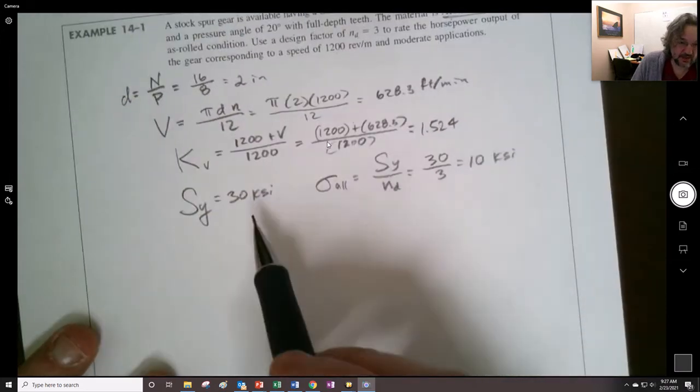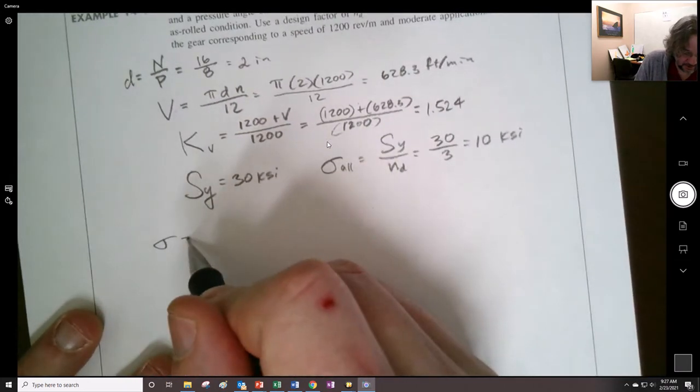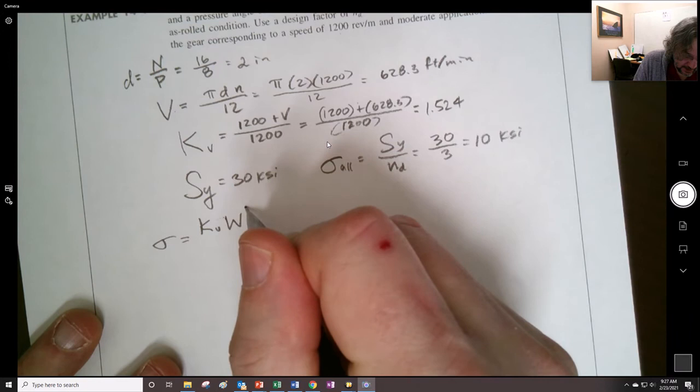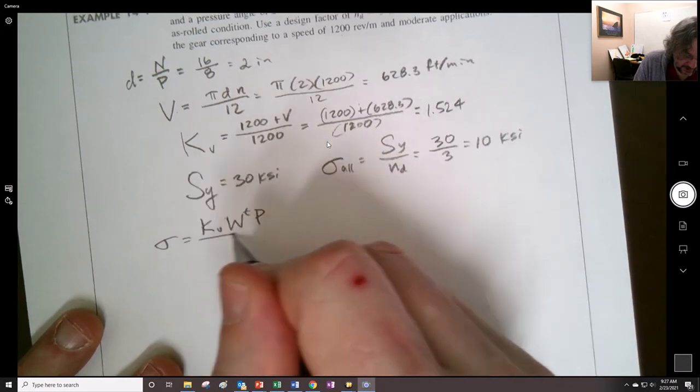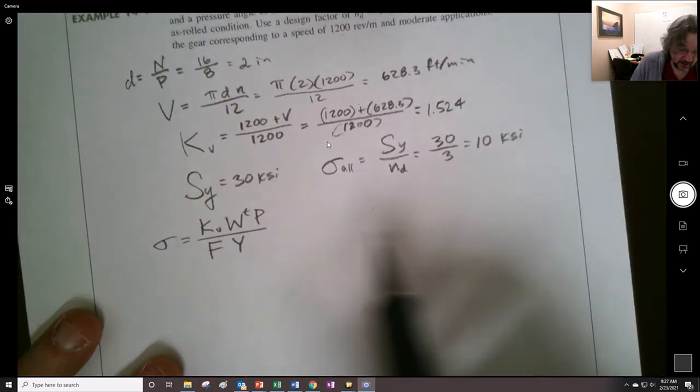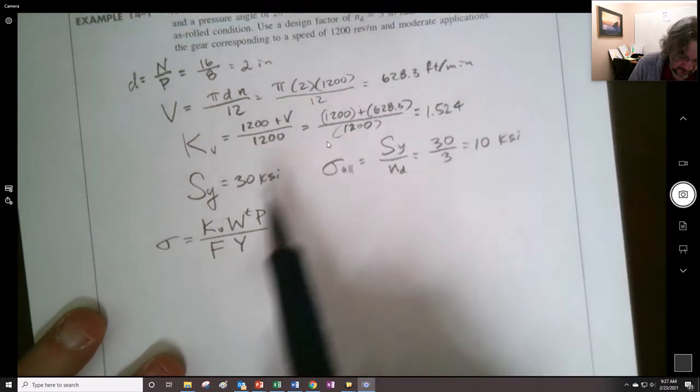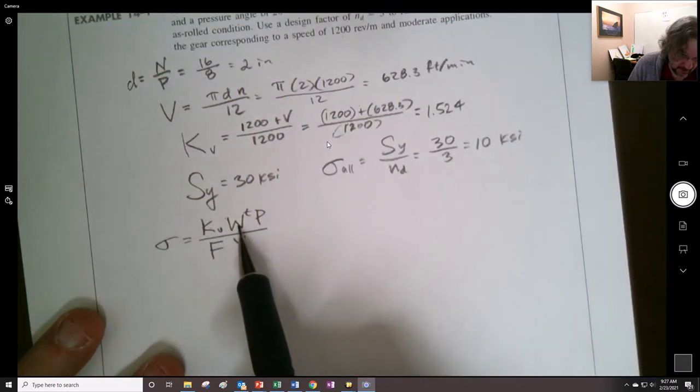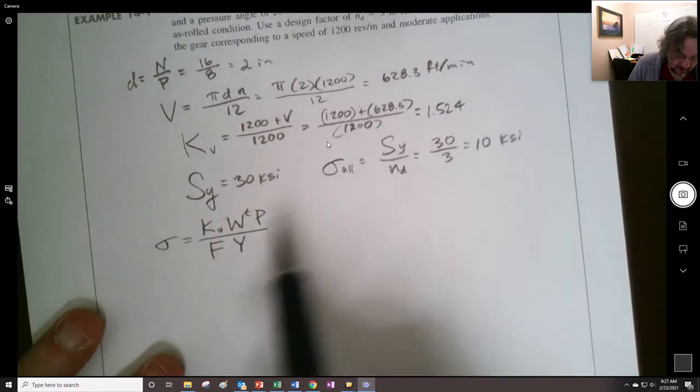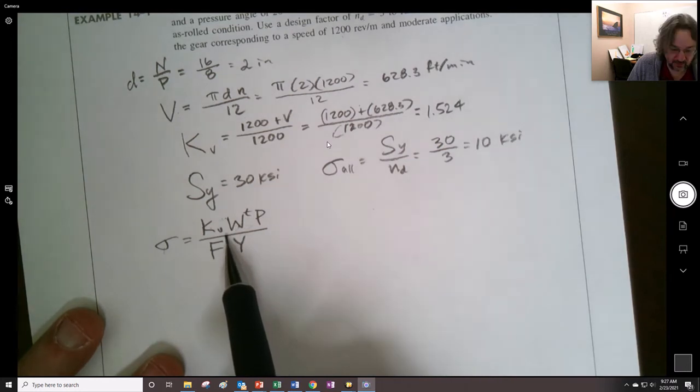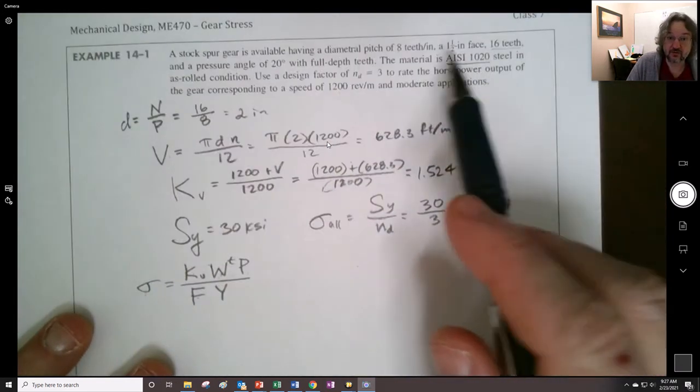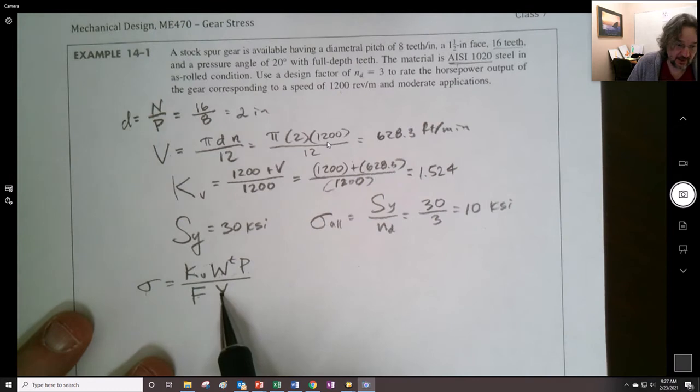Now, maybe I should write down the equation we're going to use. We're going to use the Lewis equation, which has the dynamic factor in it. It has the transmitted load, the diametral pitch, divided by the face width, and then Y right here. So that's the dynamic factor we found. This is something we're going to want to know. So this is actually our goal is to find out what this is. Here, this is going to set this to the allowable, so we can find out what that allowable load is going to be. And this diametral pitch, so we know that. We have the face width. We were told that it was 1 1/2 inch. The last thing we need is this Y.